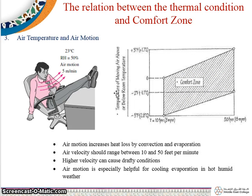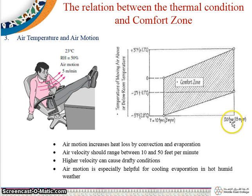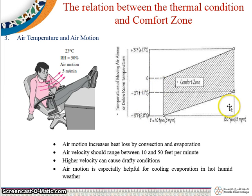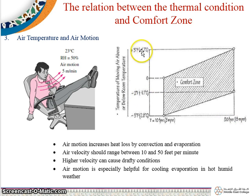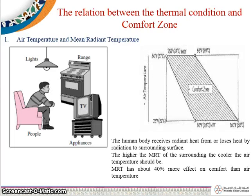When comparing air temperature and air motion, at 10 feet per minute air motion, humans feel comfort between minus 2.8 to 0 degrees centigrade. When the air motion is 50 feet per minute, humans feel comfort between minus 1.1 to plus 1.7 degrees centigrade. This illustrates what the comfort zone is and how relative humidity or mean radiant temperature should be.